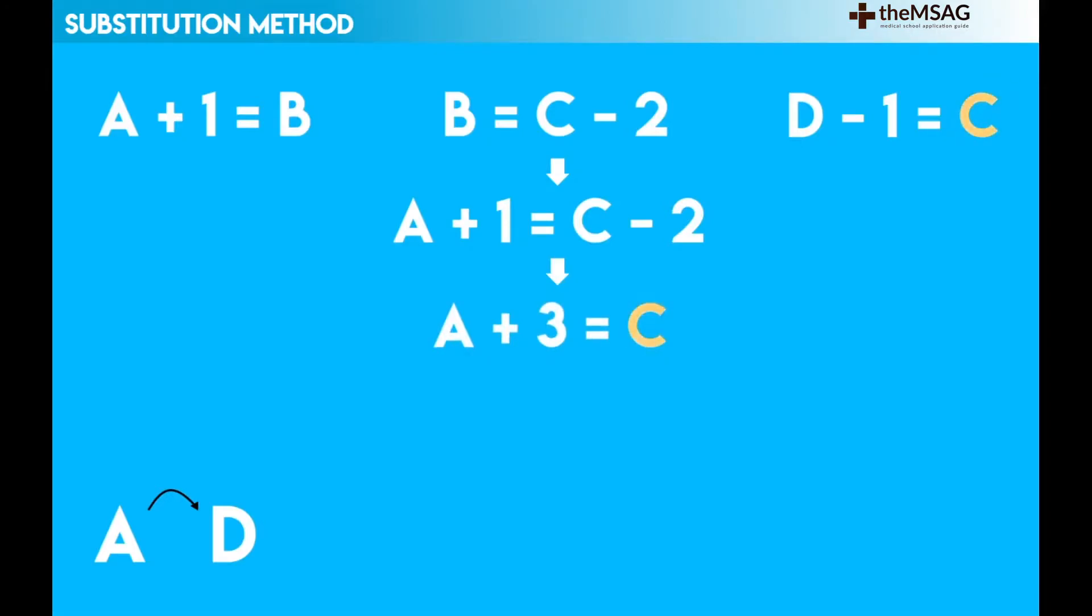This c is the same as the c in the equation d minus 1 equals c. Substitute d minus 1 into the a plus 3 equals c equation to get a plus 3 equals d minus 1. This can be simplified down to the final answer which is d equals a plus 4.